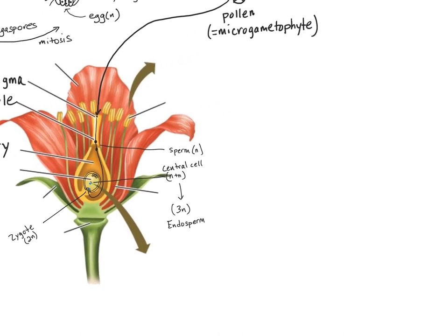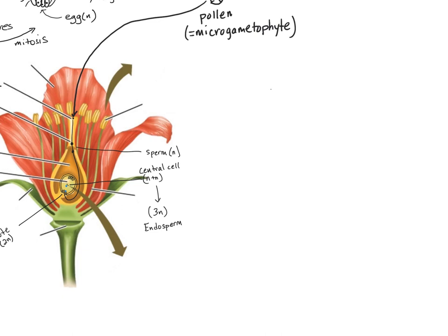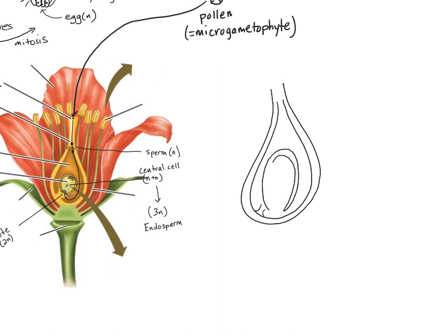And so to simplify, what we really end up with is our flower that contains our newly formed zygote that's diploid, surrounded by a bunch of 3N tissue, which is the endosperm.